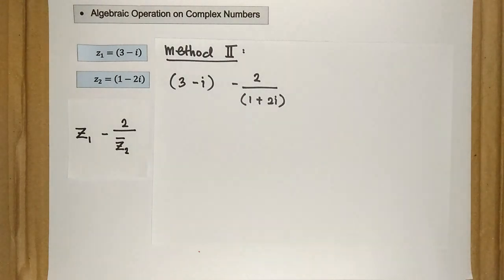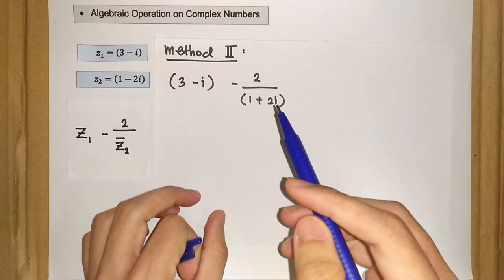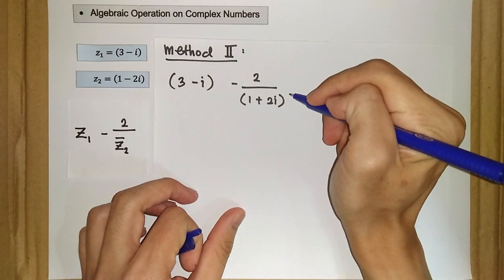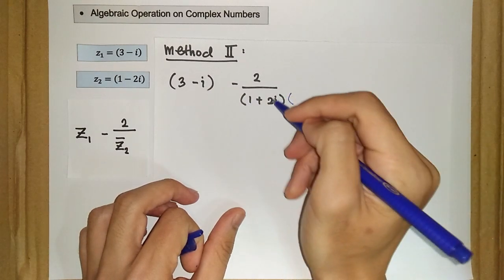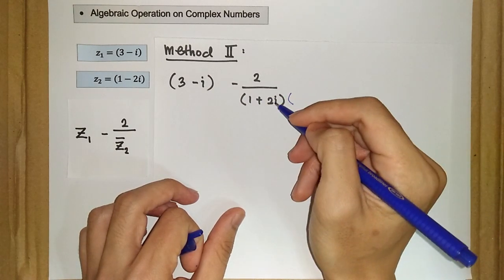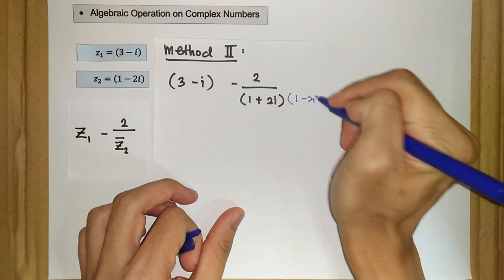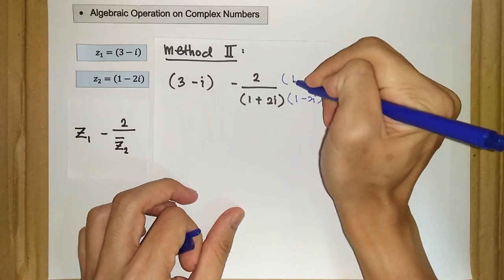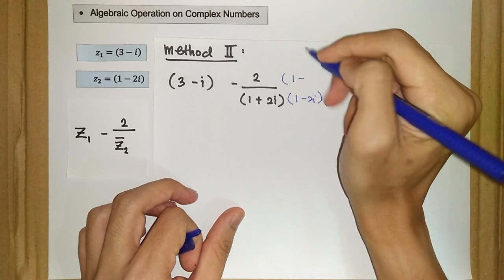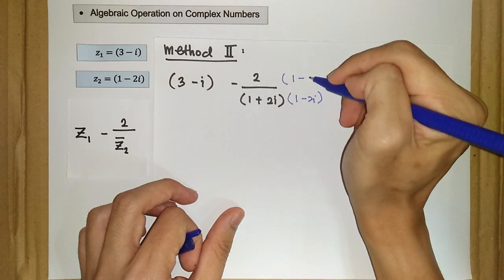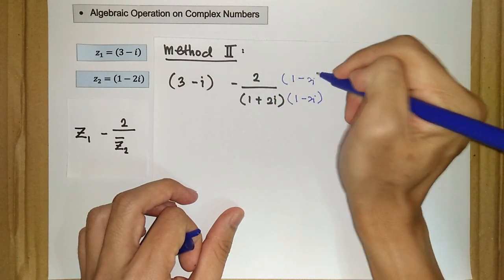What we have here is 2 over (1 + 2i). To rationalize it, we multiply the denominator with its complex conjugate, so we have (1 - 2i). The same applies to the numerator, so we have (1 - 2i) over here as well.